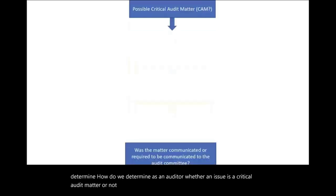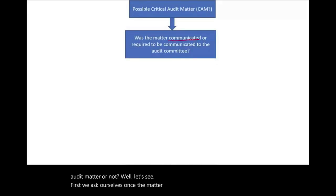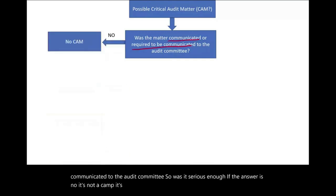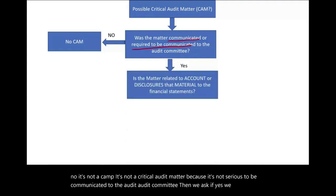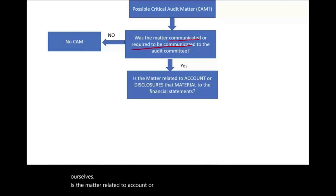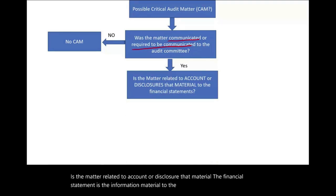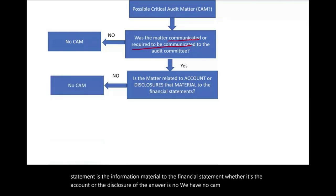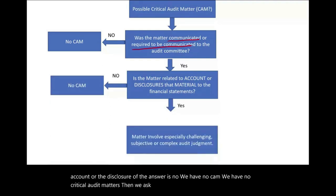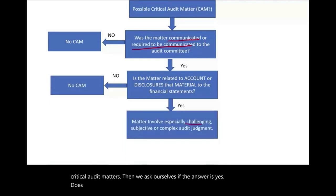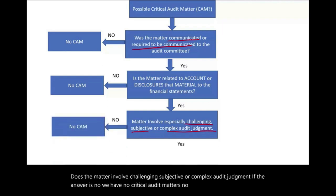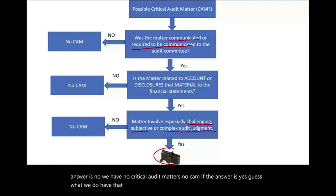First, we ask ourselves: was the matter communicated or required to be communicated to the audit committee? If the answer is no, it's not a CAM — it's not serious enough to be communicated to the audit committee. If yes, we then ask: is the matter related to an account or disclosure that is material to the financial statements? If no, we have no CAM. If yes, we ask: does the matter involve challenging, subjective, or complex audit judgment? If no, no CAM. If yes — we do have a critical audit matter. This is how we determine whether we have a CAM at hand.